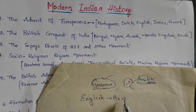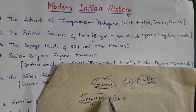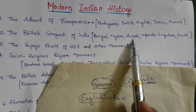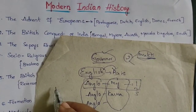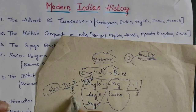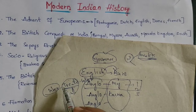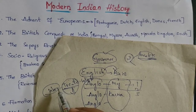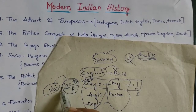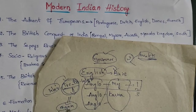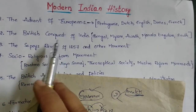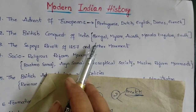The British started with trade and transactions, then occupied many places — this is known as the British conquest of India. They used wars, treaties, and annexations. By defeating local kings, they could collect taxes and take territories through conquest, wars, and treaties.